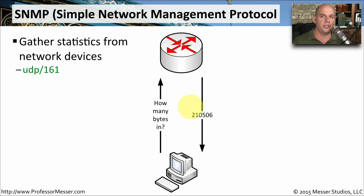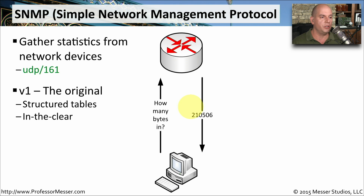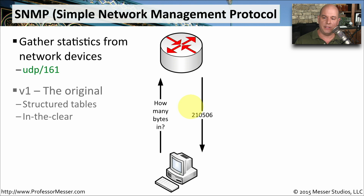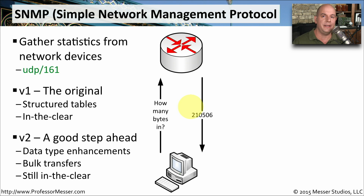There are many different versions of SNMP. SNMP version 1 was the original version, and it had a very structured way of communicating to the device, but it transferred information over the network in the clear without any type of encryption. SNMP version 2 was a good next step — it allowed for bulk transfers, so instead of asking for only one thing at a time, you could ask for a large number of statistics and get them all at once, but it was still non-encrypted communication.